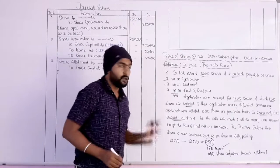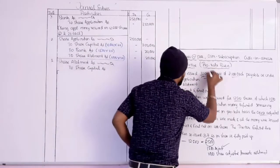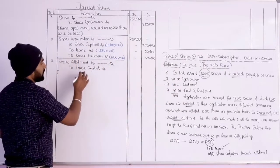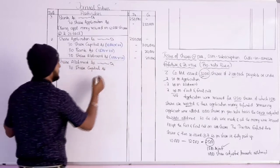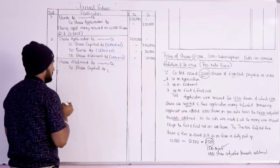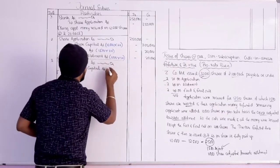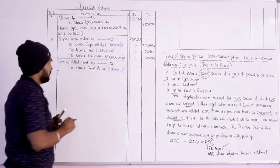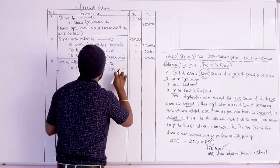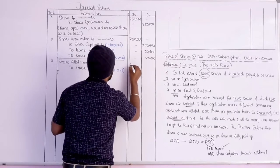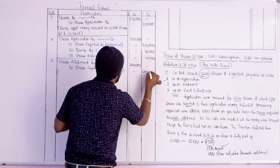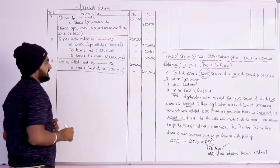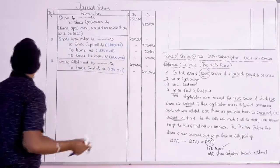Allotment money due on 10,000 shares at ₹40 each: Share Allotment Account debit to Share Capital Account. 10,000 × 40 = ₹4,00,000 debit and ₹4,00,000 credit. Narration: allotment money due on 10,000 shares at ₹40 each.